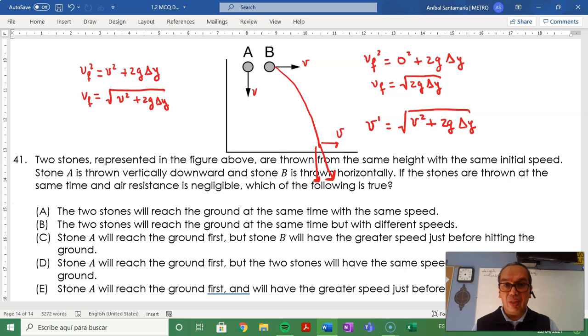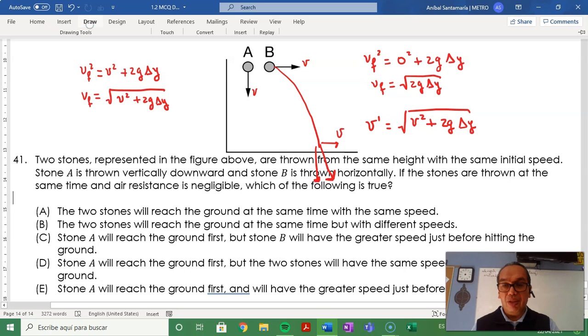So, the two stones will reach the ground at different times, probably A will reach the ground first. Now, the two stones will have the same speed, even if the velocities are in different directions. The best choice for that is option D.